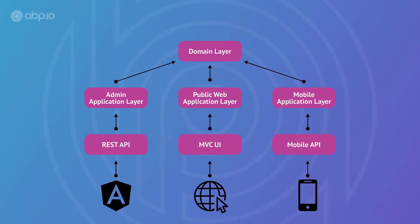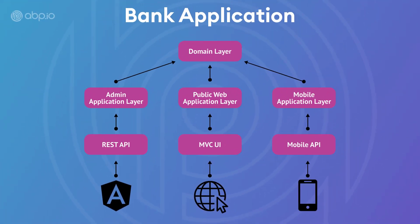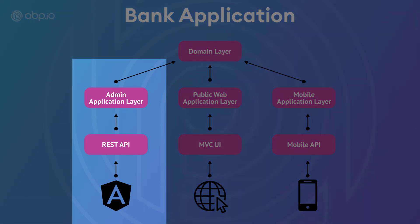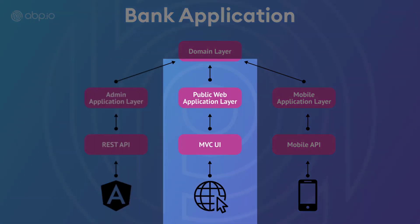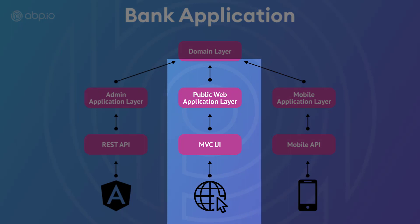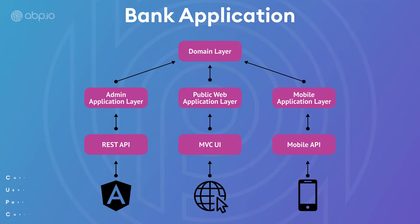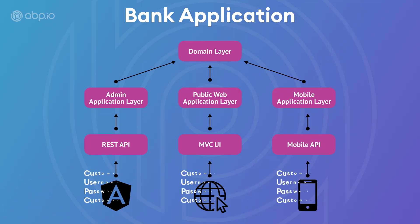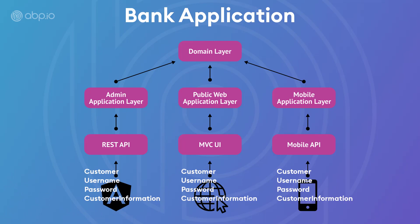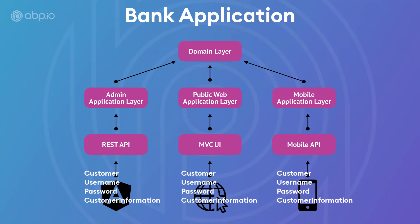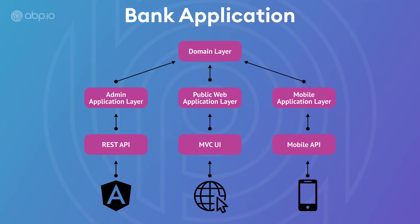Say for example we have the logic of a large bank application divided between three main applications: the admin, which is a single page application on Angular; the website running on MVC; and the mobile application. The customer information, username, password, and all of these should be consistent across all three applications, and so they should be in the core domain logic.